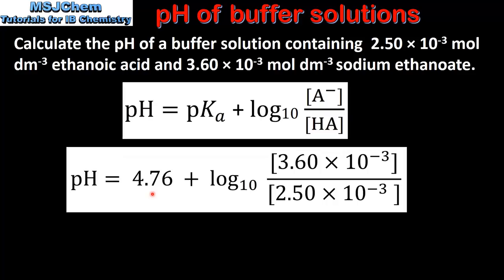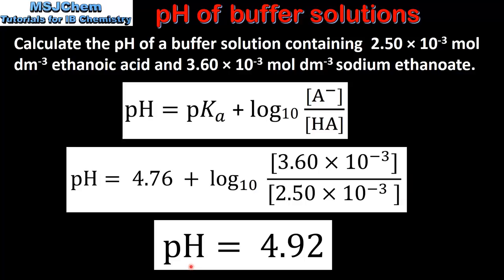The pKa of ethanoic acid is 4.76, which can be found in section 21 of the data booklet. Next we input the concentrations of the sodium ethanoate and the ethanoic acid. When we do the calculation we get a pH value of 4.92.